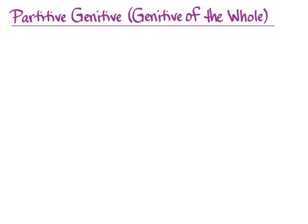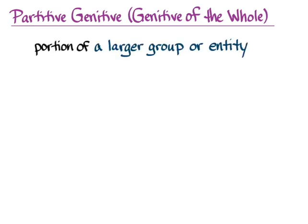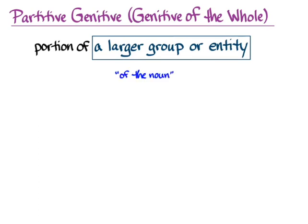The partitive genitive — the genitive of the whole, or the genitive of the divided whole — is something that you use when you are talking about a portion of a larger group or entity, and the partitive genitive is what you use for that larger group or entity. The default translation is going to be 'of the noun,' and you'll find this pretty natural to do in Greek because it's the same way we do it in English.